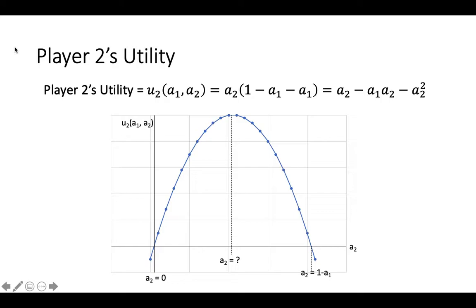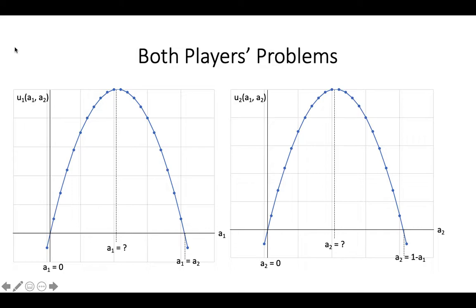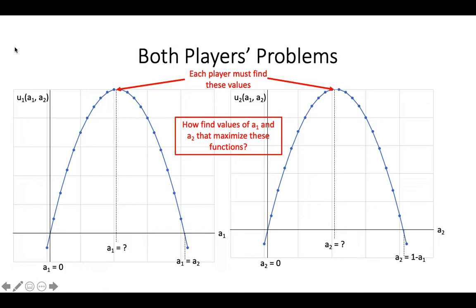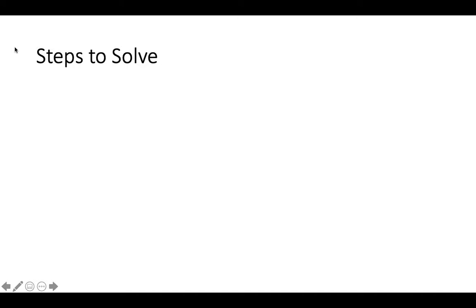Player 2's utility function also has a negative A2 squared term in it, so it is also shaped like an upside-down parabola. The only difference is that Player 2's utility function crosses the horizontal axis at 0 and where A2 equals 1 minus A1. Player 2's problem is to find the value of A2 associated with the maximum value of their utility, which will be a function of A1. So both players essentially have the same problem: each must find the number associated with the maximum value of their utility function. The answer, of course, is calculus.